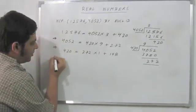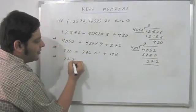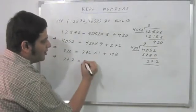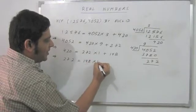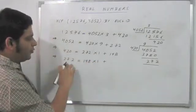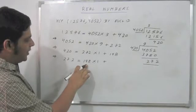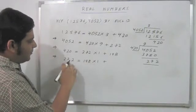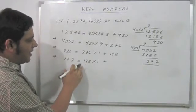Again, not a 0 remainder, so apply it again. So 272, smaller number is 148 into 1 plus the remainder will be 272 minus 148, which is, say 150 would have meant 122, so this is 124.